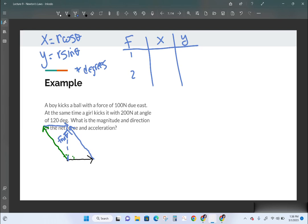So force 1 and force 2. Force 1 is due east, so it's literally 100 newtons on the x-axis and 0 on the y-axis. And force 2 is going to be 200 times the cosine of 120, and 200 times the sine of 120. So I'm going to plug that into my calculator. And I'm getting negative 100 newtons. And 200 times the sine of 120 is going to be positive 173 newtons. So my net force has an x of 0, and a y of 173 newtons.